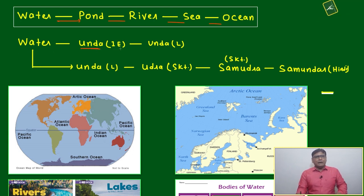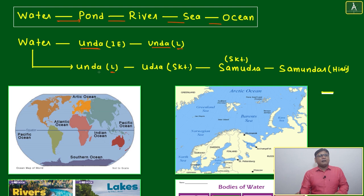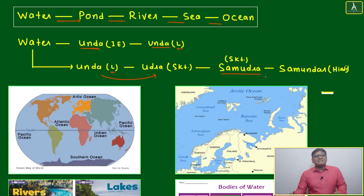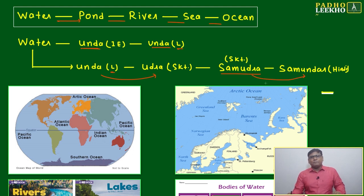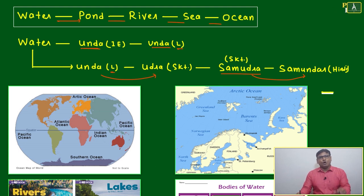The basic meaning comes from the Indo-European root 'anda', which also appears in Latin. This root evolved to 'adra', and 'adra' means water. From this, the Sanskrit word 'samudra' was created, and finally the Hindi word 'samundar' was derived.